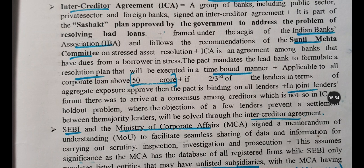Intercreditor Agreement: a group of banks including public sector, private sector, and foreign banks all signed an intercreditor agreement. It is a part of the Sashakt Plan approved by the government to address the problem of resolving bad loans. The government has framed guidelines under the Sashakt Plan for paying back principal, interest, and resolving bad loans.